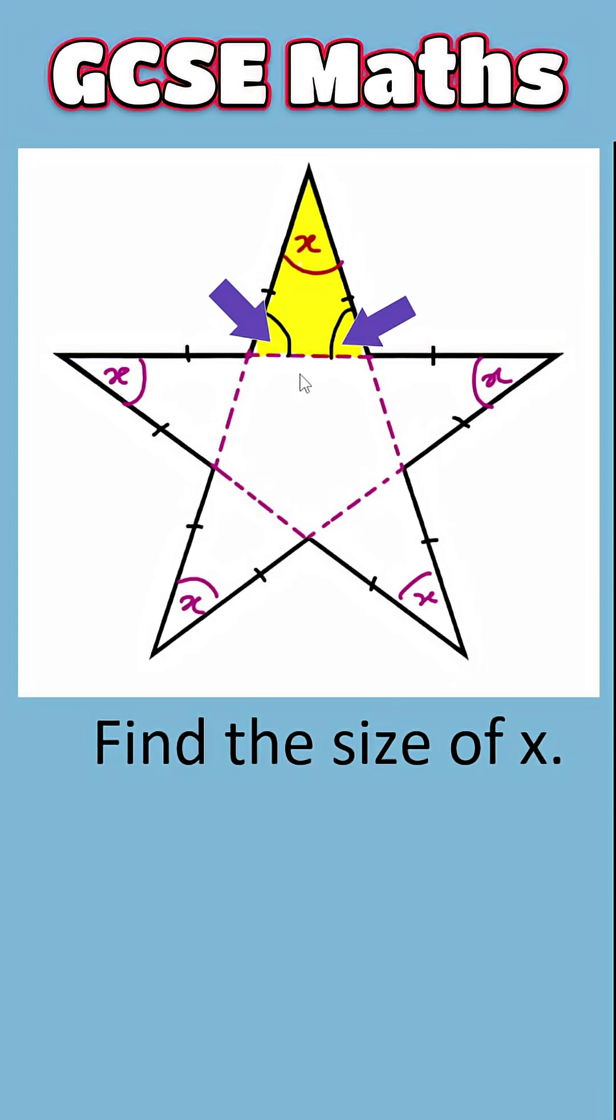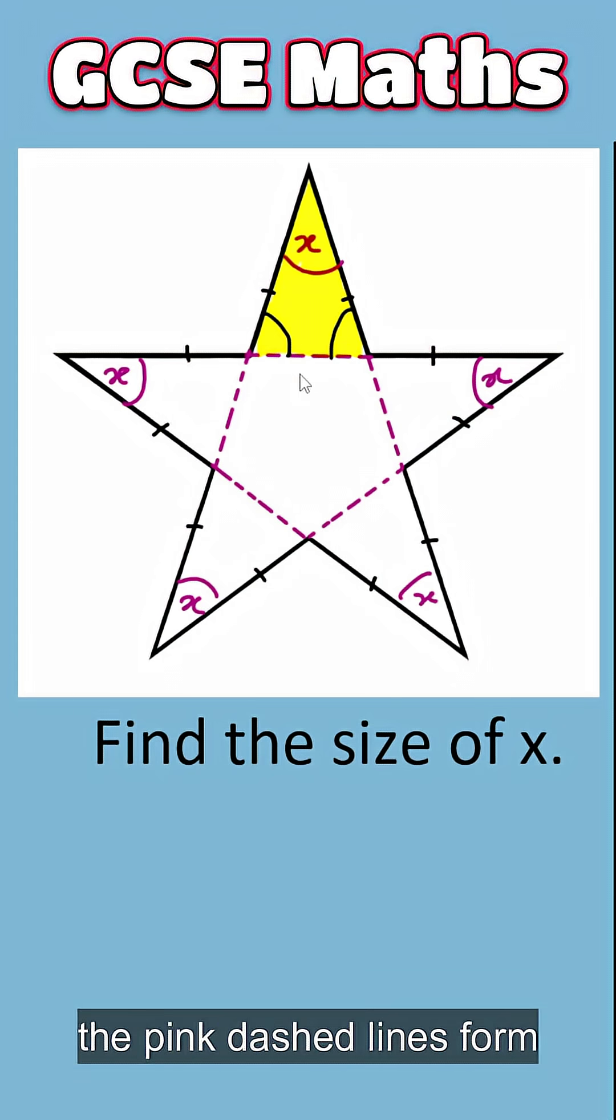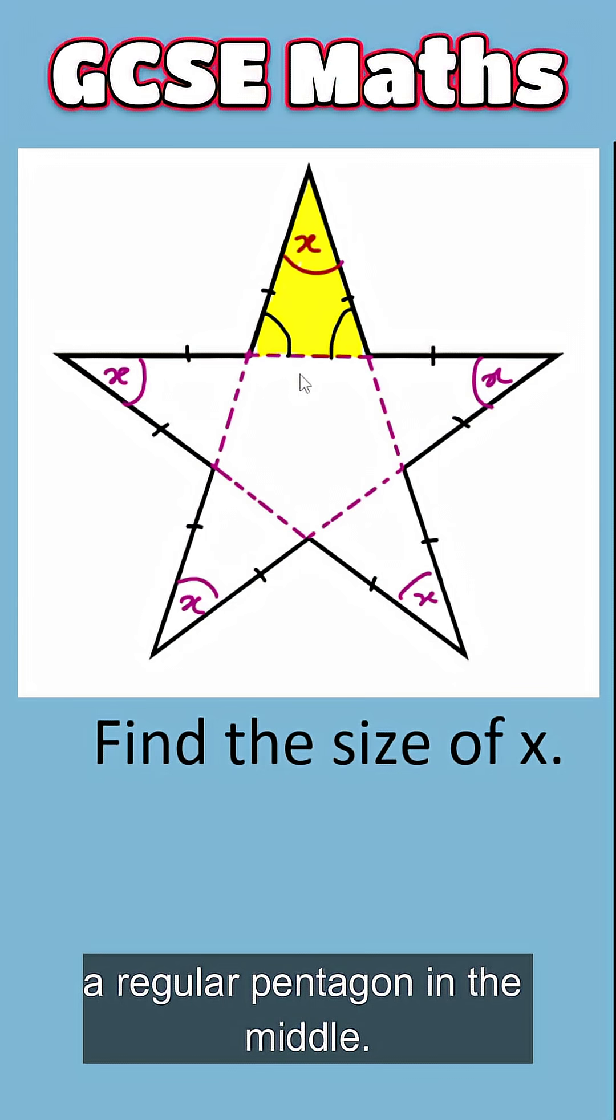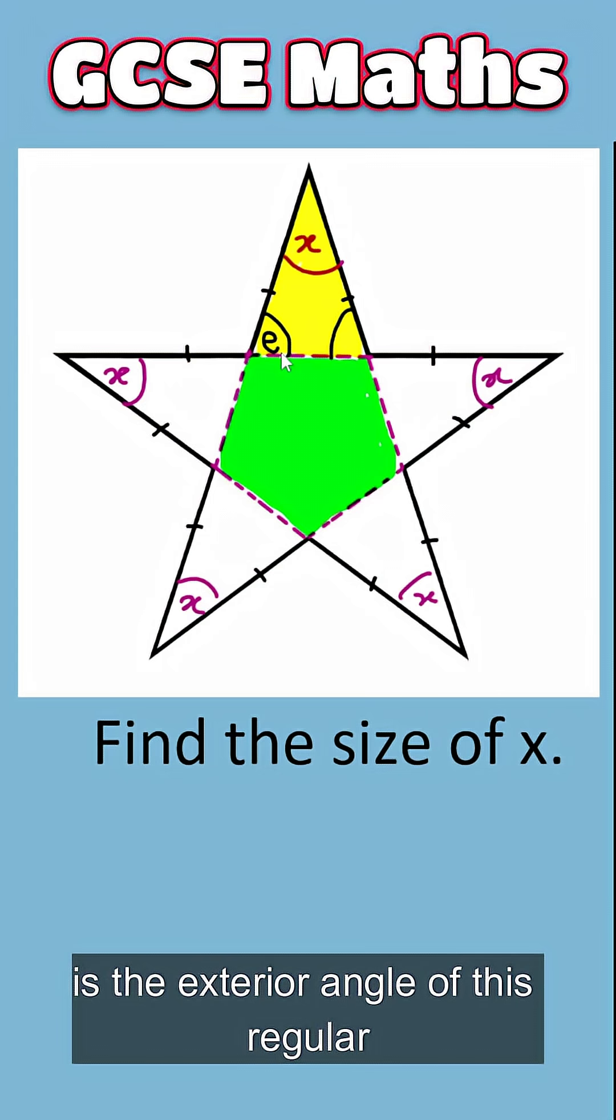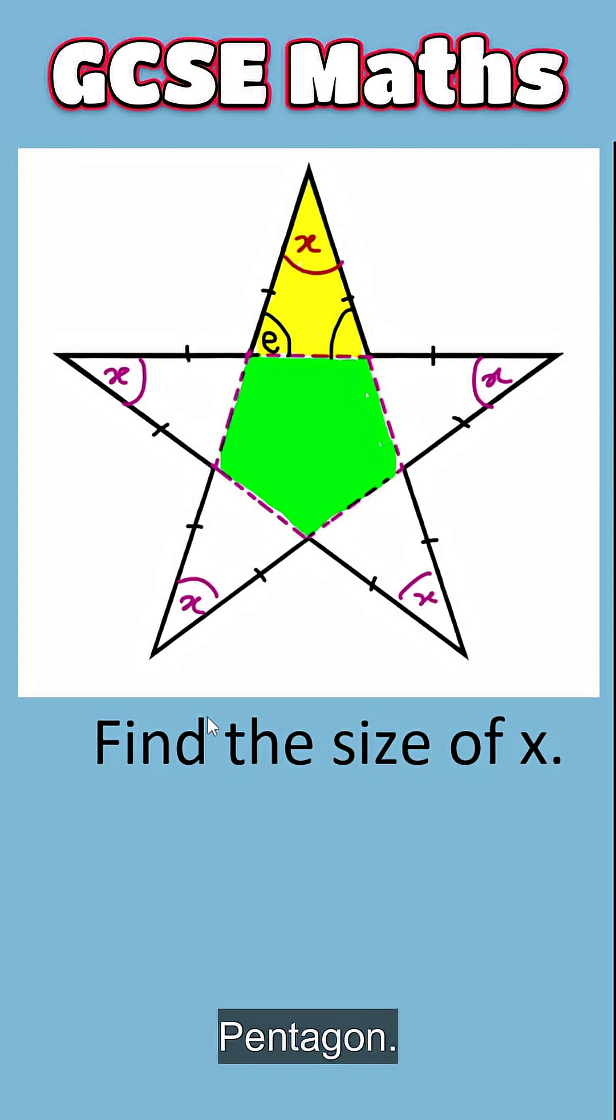And notice the pink dash lines form a regular pentagon in the middle. Now you can clearly see this angle here is the exterior angle of this regular pentagon.